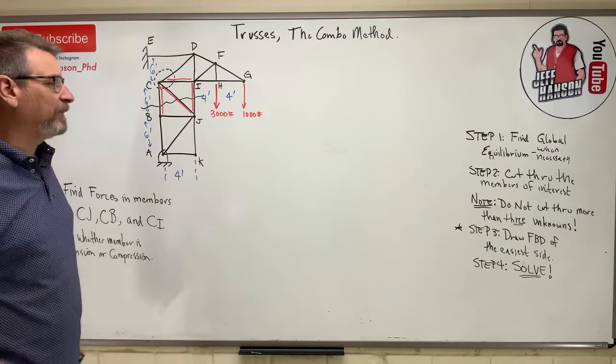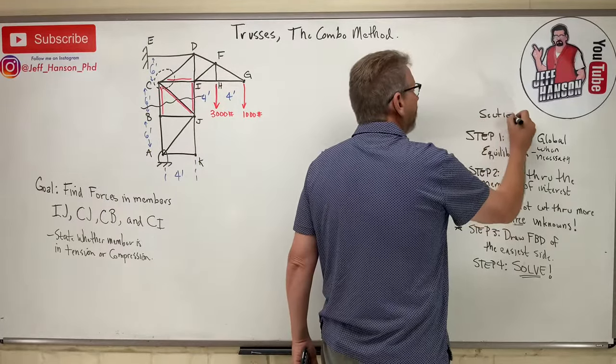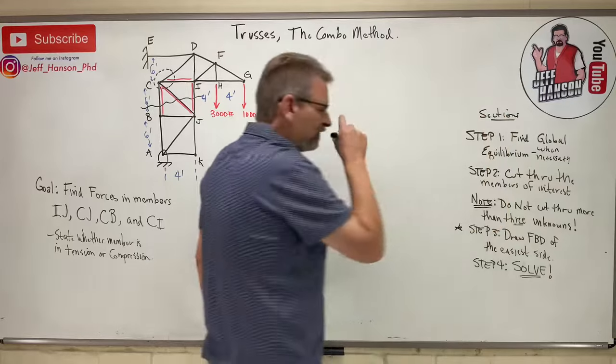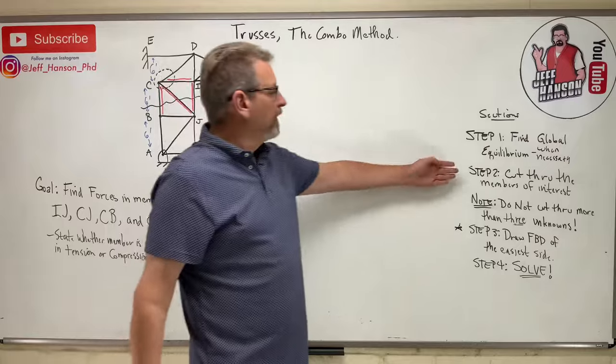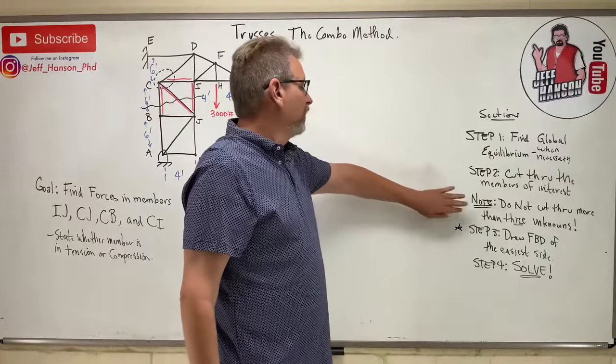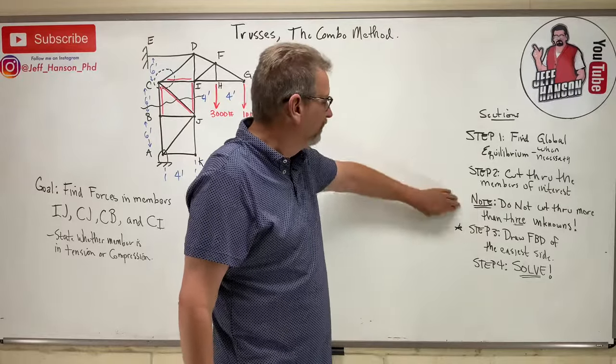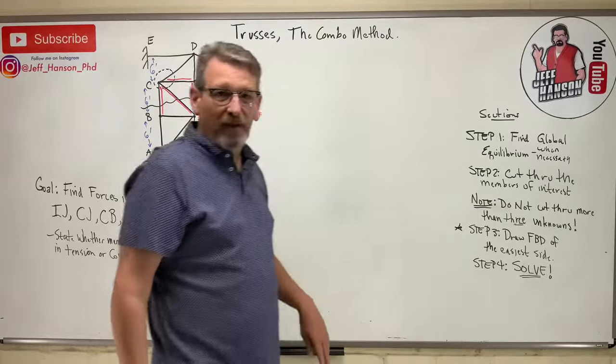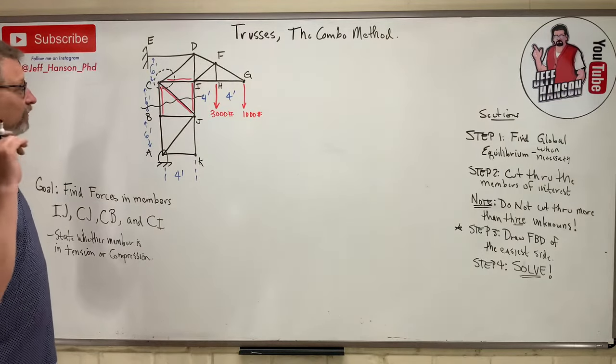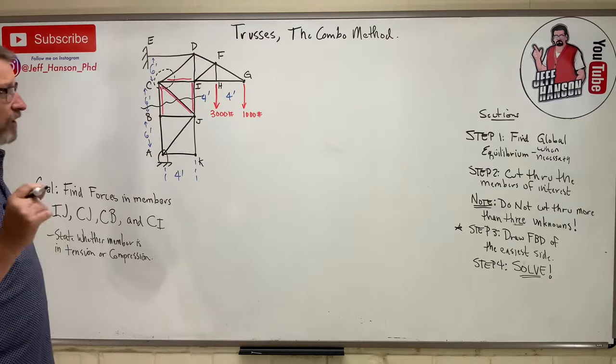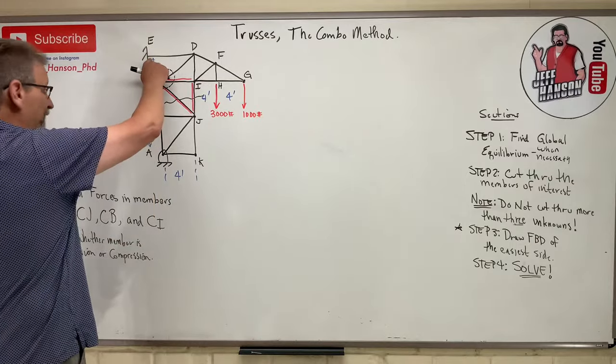So what I'm going to have to do is use the method of sections - I'm going to cut it like right through here, use the method of sections, and then come back and go one more right there - method of joints - and get that last thing that I need. So I'm going to use the method of sections and the method of joints. What? In the same problem? Yeah. I left my recipe over there.